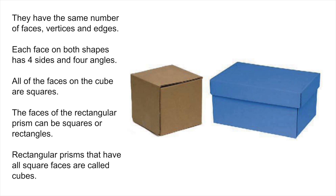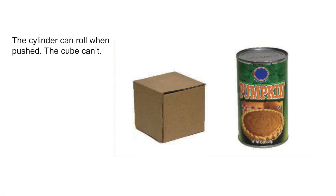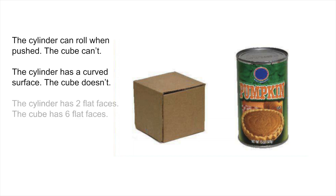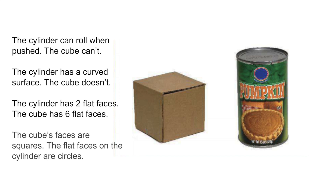Let's compare one more set of shapes — a cube and a cylinder. What do you notice when you look at a cube and a cylinder? What do they have in common? What's different about them? The cylinder can roll when it's pushed, but the cube can't. The cylinder has a curved surface, but the cube does not. The cylinder has two flat surfaces, but the cube has six. And the faces of the cube are squares, but the faces of the cylinder are circles.